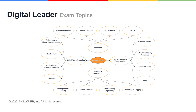Moving on, we have Innovating with Data and Google Cloud. Here you will have cloud solutions for data management, smart analytics, Google Cloud data products, and machine learning and AI. Moving on, you have Infrastructure and Application Modernization, where we will be looking at modernizing IT infrastructure, virtual machines, containers and serverless computing, modernizing applications, and APIs.